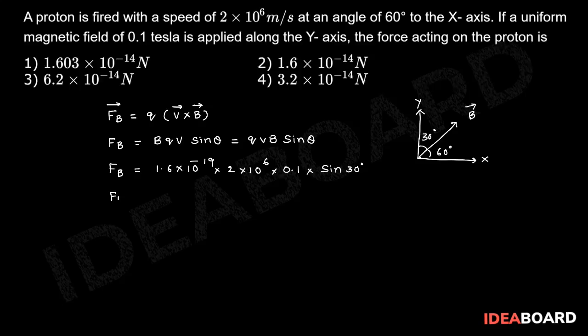Thereby FB is equal to 1.6×10⁻¹⁹ times 2×10⁶ times 0.1 times sin 30°, which is 1/2. After simplification, FB is equal to 1.6×10⁻¹⁴ Newton.